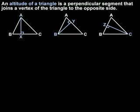And segment CZ is an altitude of triangle ABC because one of its endpoints, C, is a vertex of the triangle, and its other endpoint, Z, is located on the opposite side of the triangle such that segment CZ is perpendicular to the opposite side, AB.